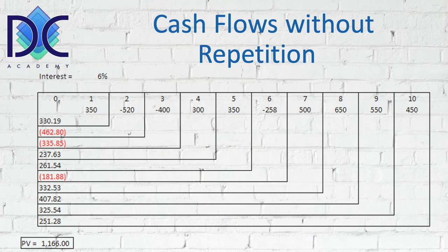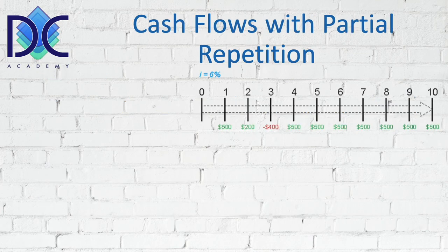We will see later that using some other formulas we may find a better and easier way to do this using standard spreadsheet formulas. Now we have another case: a partial repetition. From period four to period ten we have basically repeating cash flows. In periods one, two, and three we don't have those, so here we can combine the calculations.